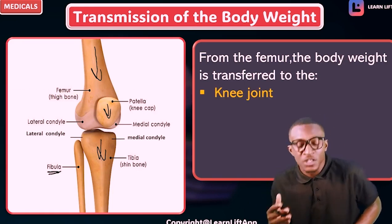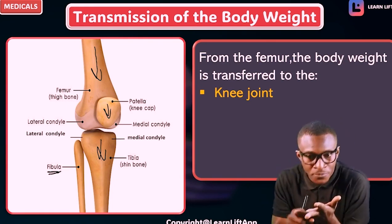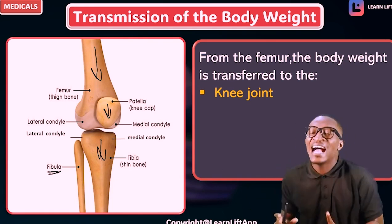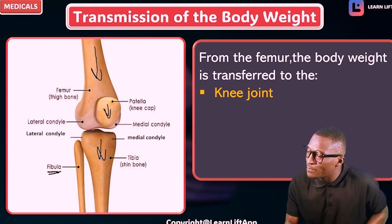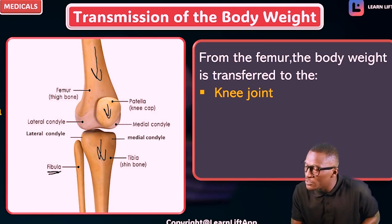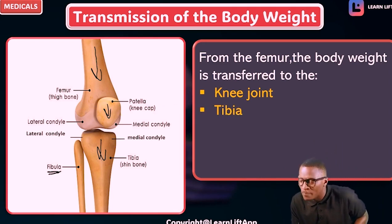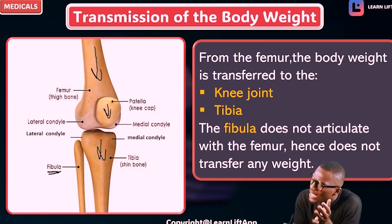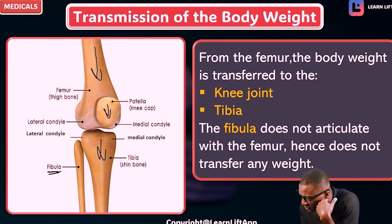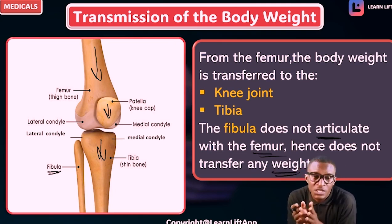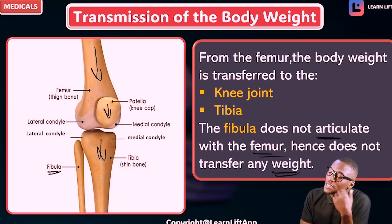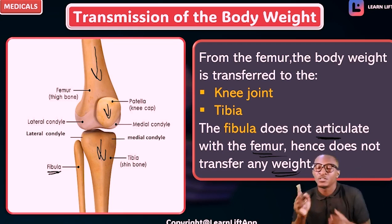From the femur, the weight is transferred to the knee joint. The knee joint is formed by the distal femur, the patella, and the upper tibia. From the knee joint the weight moves to the tibia. The fibula does not articulate with the femur, hence it does not transfer any weight. The weight moves: distal femur → patella → tibia.